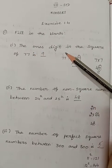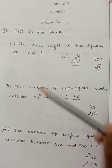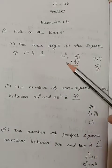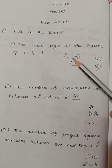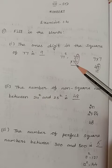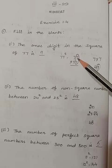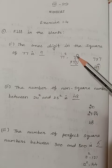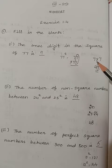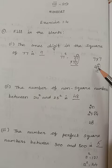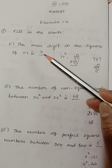The ones digit in the square of 77 is? It is given square of 77, which means 77 squared, that is 77 into 77. Now let us consider the ones digit here. The ones digit here we have 7 and here we have 7, so we will multiply the ones digit numbers. 7 into 7 is 49. In 49, the ones digit is 9. So the answer is 9.